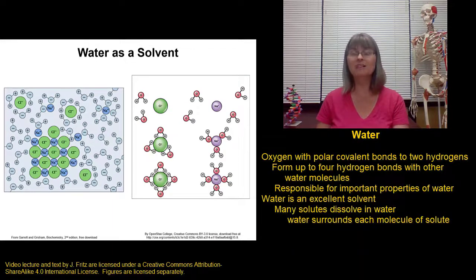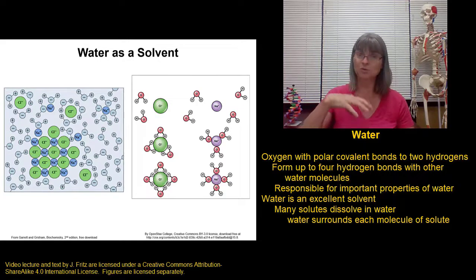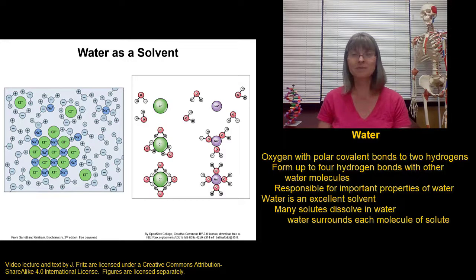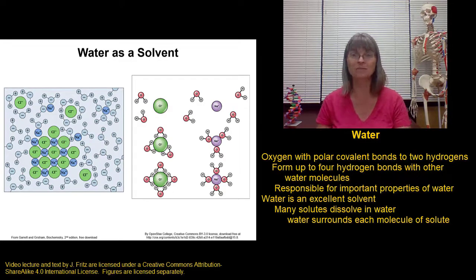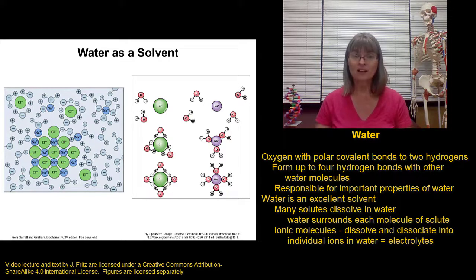The third important property of water is that water is an excellent solvent — meaning lots of things dissolve in water. When something dissolves in a liquid, that liquid is the solvent, and the substance that dissolves is called the solute. Many different solutes will dissolve in water, which matters greatly because there is so much water in our bodies and cells. Things need to dissolve into that water to function, react, and travel. To understand how water dissolves substances, consider salt — sodium chloride — which is formed by the ionic attraction between positively charged sodium and negatively charged chloride ions.